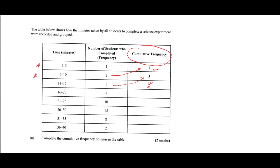We then take the seven and add it to the last cumulative frequency of eight: seven plus eight gives fifteen. Then we take ten and add it to fifteen, which gives twenty-five. The next step gives forty. Then we add eight to forty, giving forty-eight. Finally, we take two and add it to forty-eight, giving fifty.